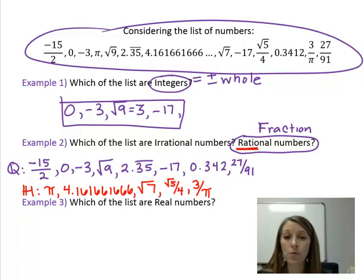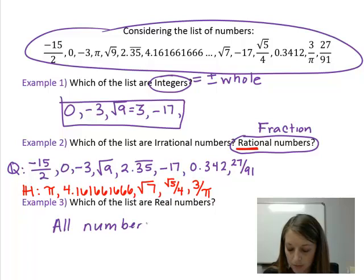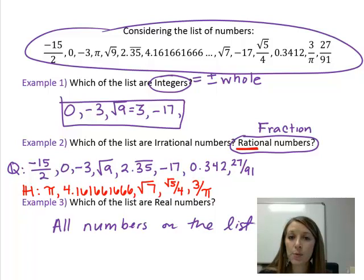In example 3, what I could do is rewrite down every one of the numbers. Or, I am going to take the lazy way out. I am just going to say all numbers on the list. And so at this point, we have declared which of this list are integers, rational and irrational, as well as real numbers.